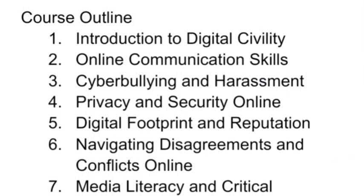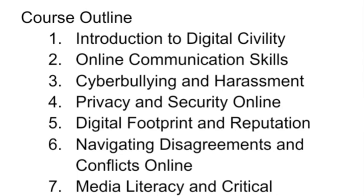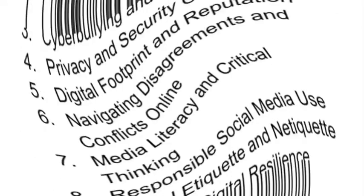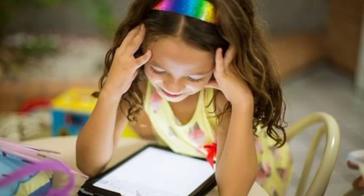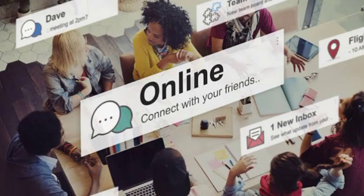Then we'll look at privacy and security online — what is it about. Then we'll look at digital footprint and reputation. After that, we'll look at navigating disagreements and conflicts online. Number seven will be media literacy and critical thinking, and number eight covers responsible social media use — how do you use social media responsibly.